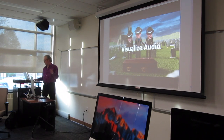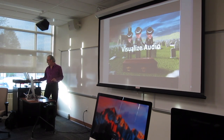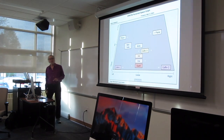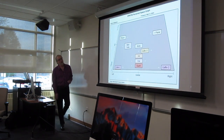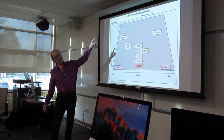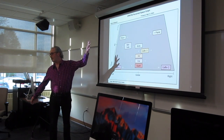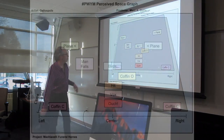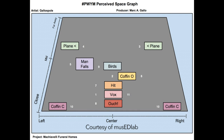For instance, I'll show you this graph here. It's called a space graph. And if you can see, it's center, left to right, and then depth — close up, midfield, far away.